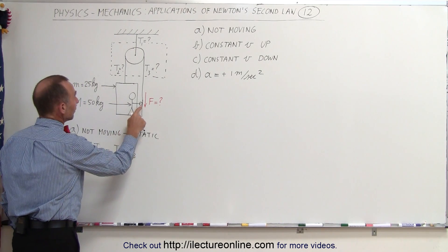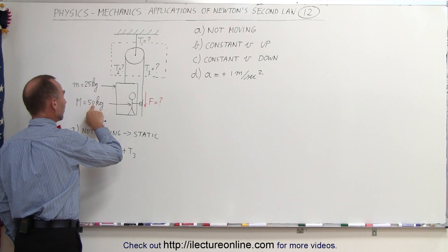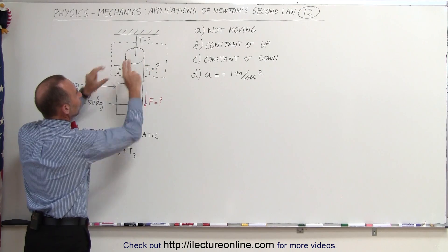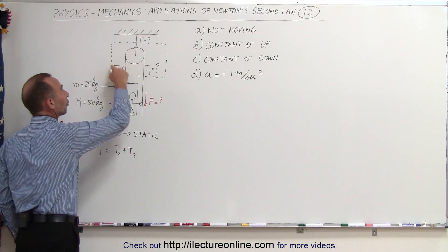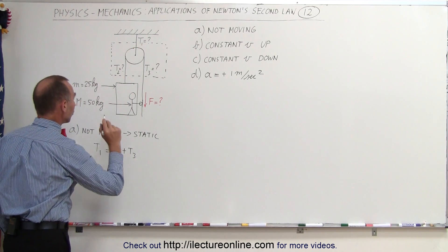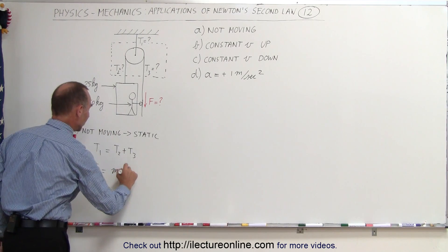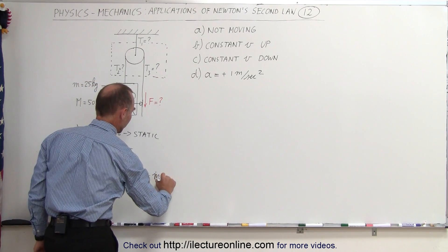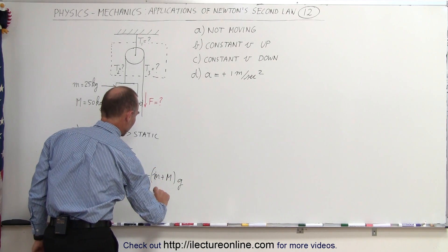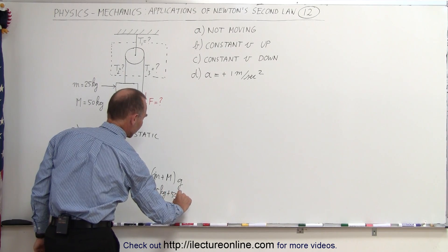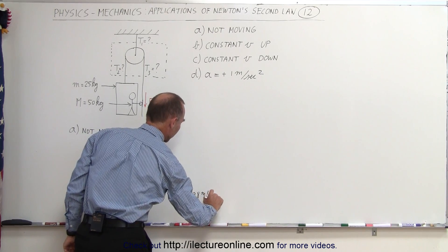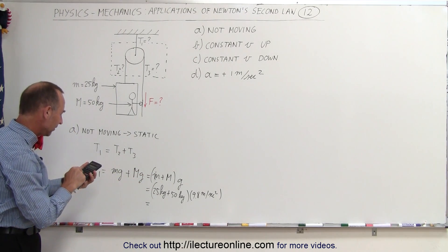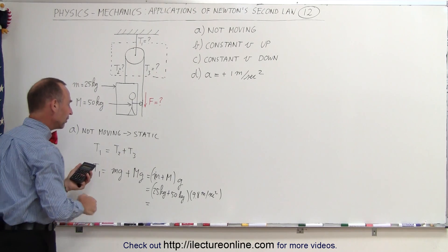The entire weight of the person (50 kg) and the box (25 kg) is supported by cables 2 and 3, so T1 must equal the sum of both weights: T1 = (m + M) × g = (25 + 50) × 9.8 = 75 × 9.8 = 735 newtons.